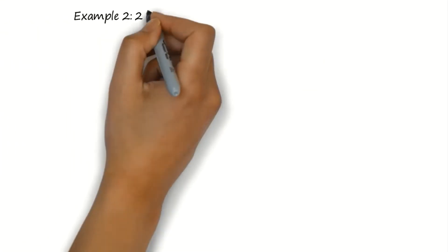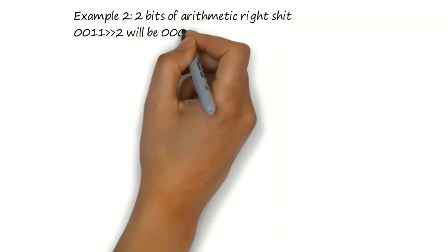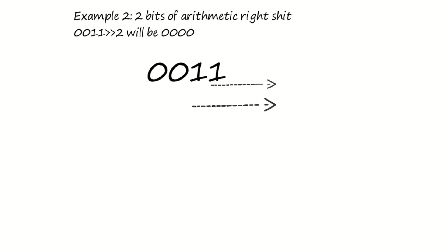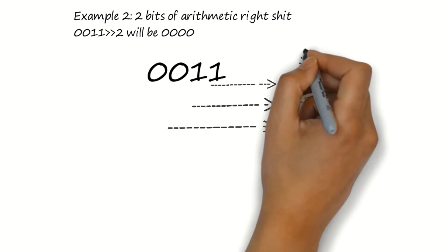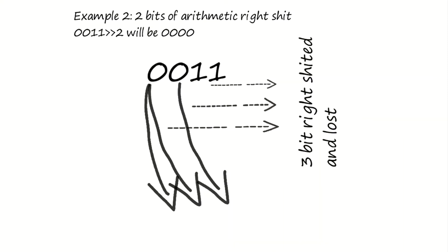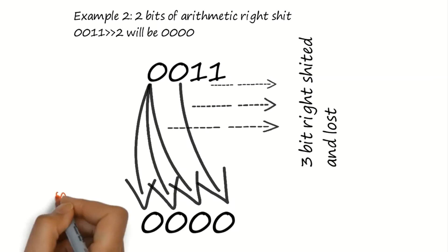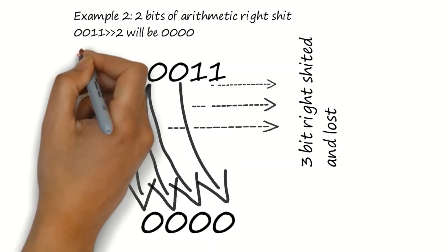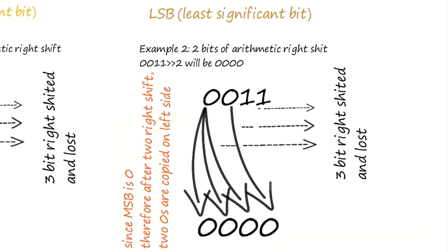In example 2, after 2-bit right shift, since MSB was 0, the left 2 bits will be replaced by 0, and it will become 00000.